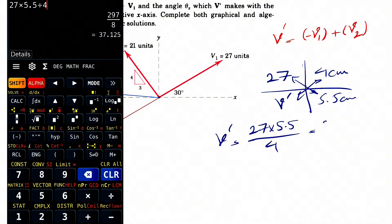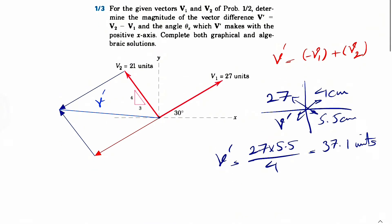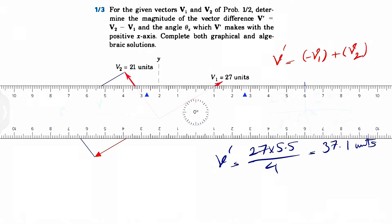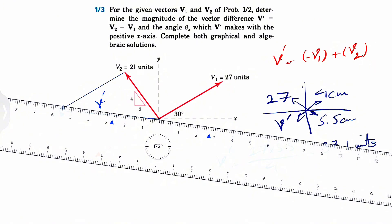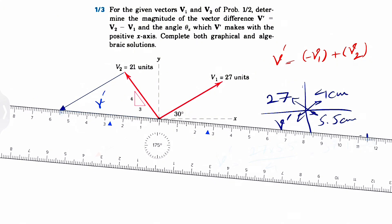27 times 5.5 divided by 4. So this is going to be around 37.1 units. But again, if you're looking for the, we can find the exact value using the algebra. And if you want to find the angle in here...